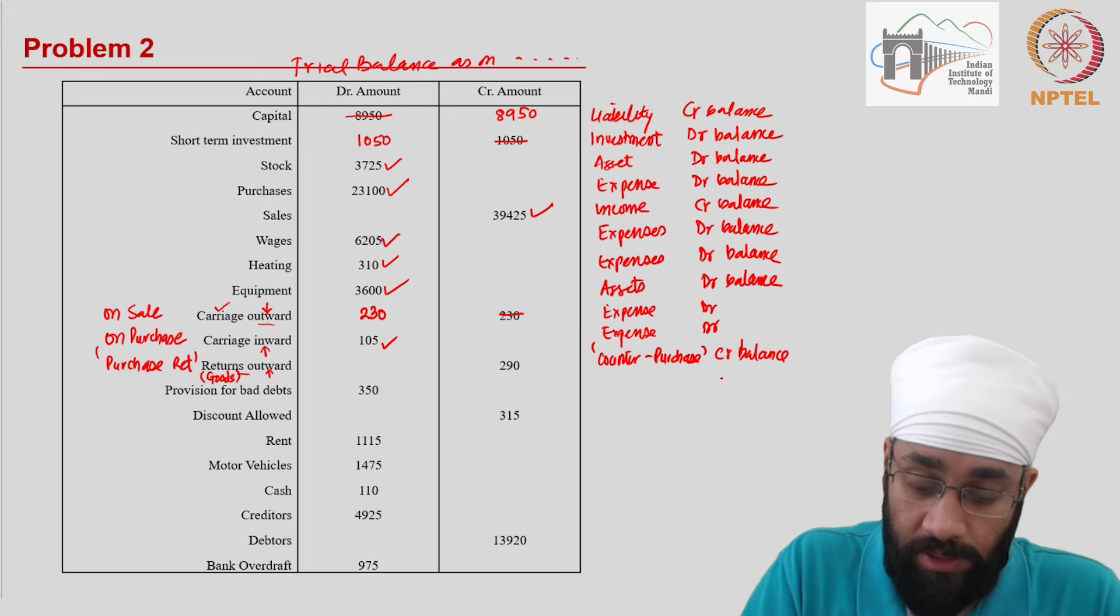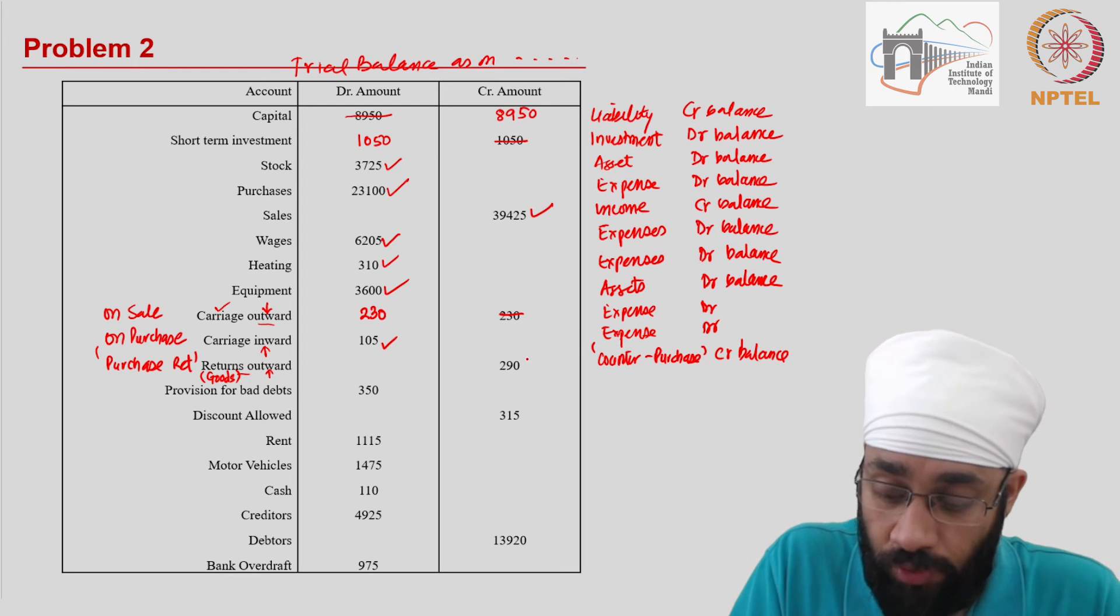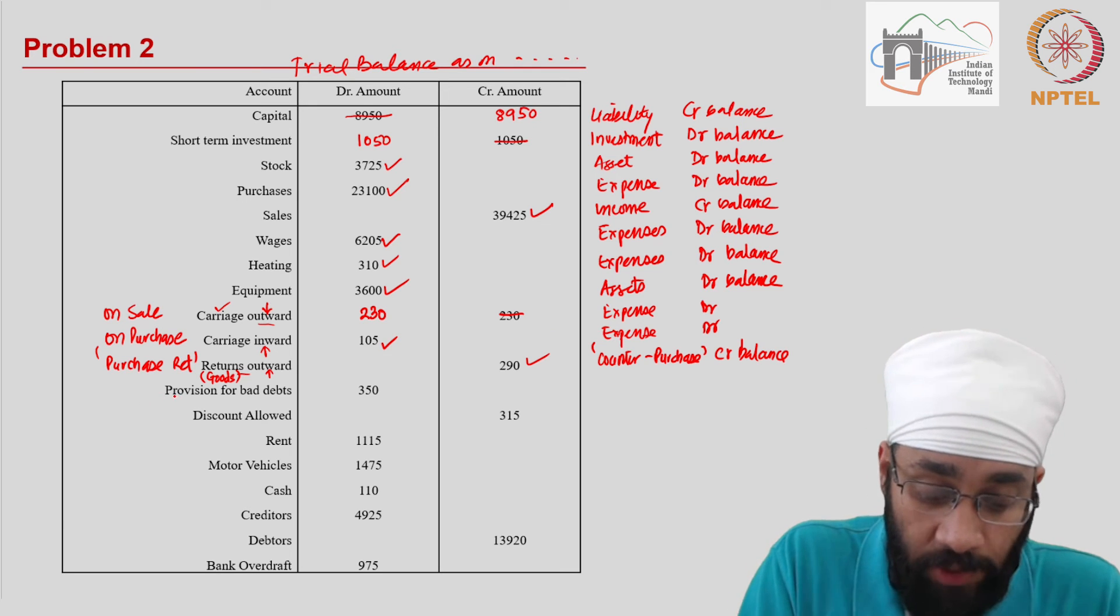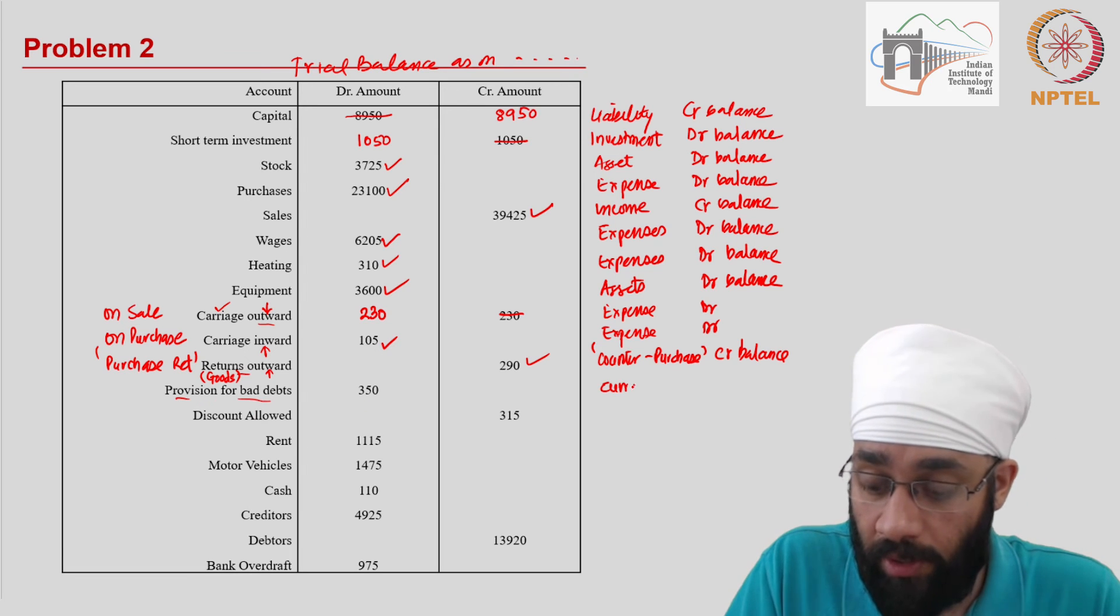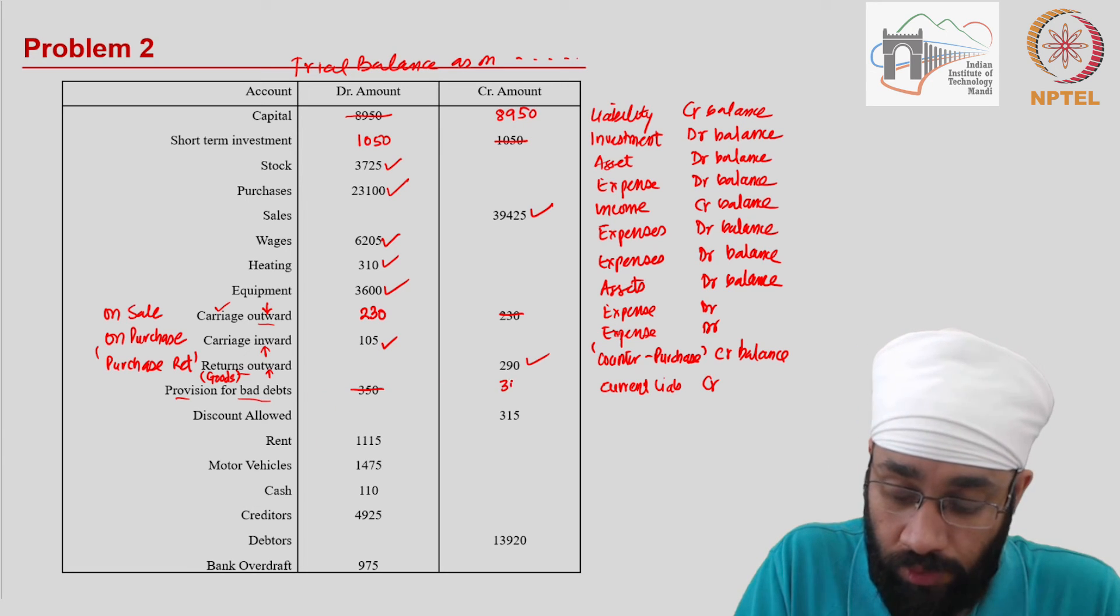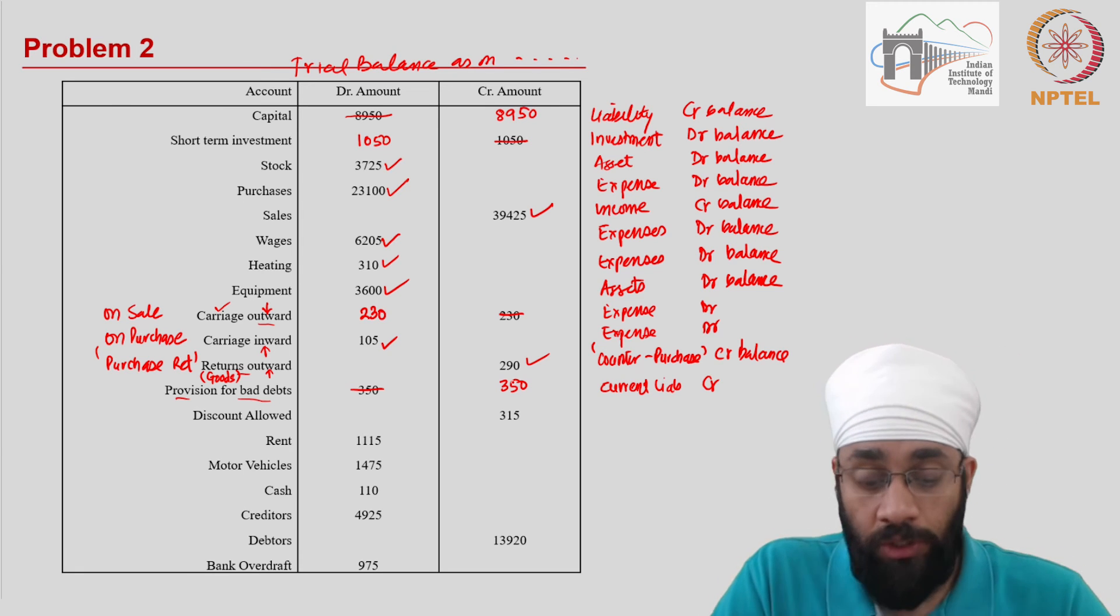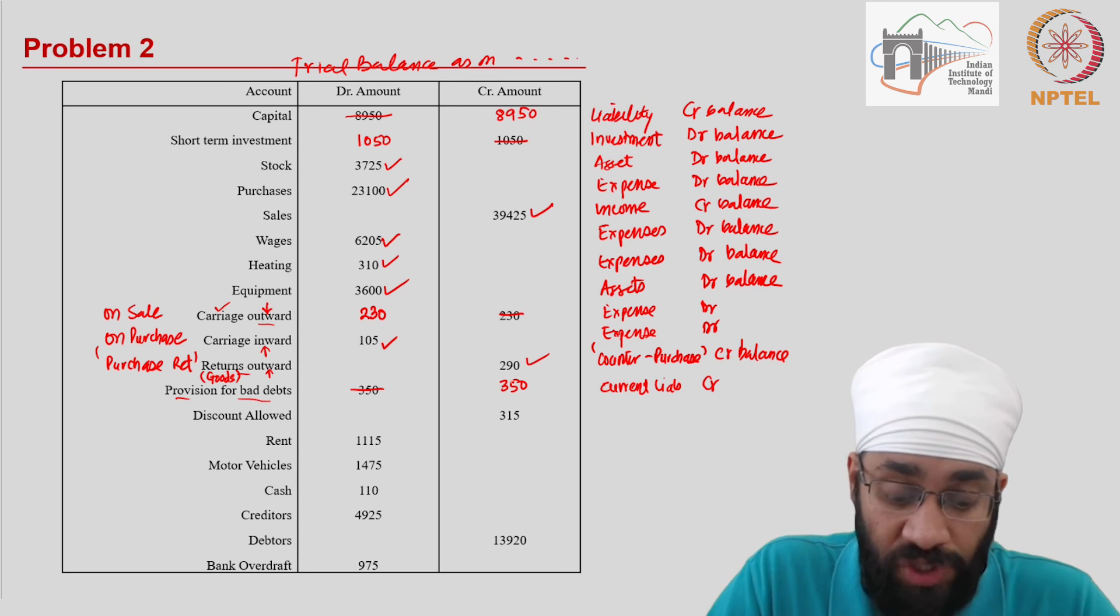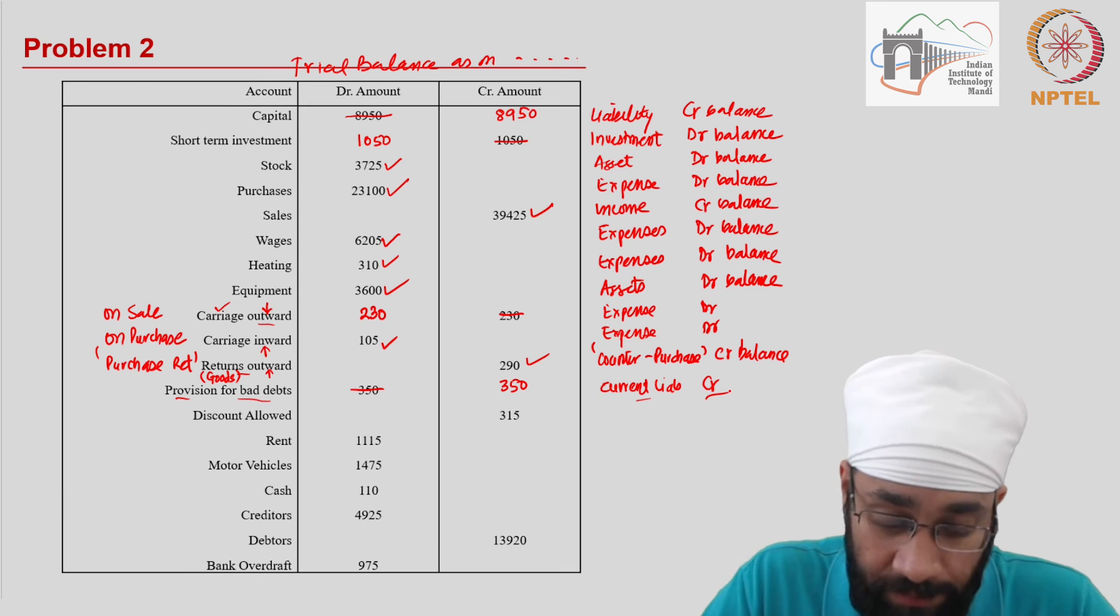Purchase return is going to have the opposite balance of the purchase account. Purchases always have a debit balance, and purchase return always has a credit balance. Purchase return is not necessarily an item of income, expense, asset, or liability, but this is a counter purchase account—opposite of purchase account. So this should have a credit balance. It is being shown on credit side, so that is fine. Then you have a provision for bad debts. All provisions are shown under current liabilities in the balance sheet, and liabilities always have a credit balance. Provisions are typically the money set aside out of the profits of the business to meet future liabilities. So provisions represent a possible liability, and all liabilities have a credit balance.